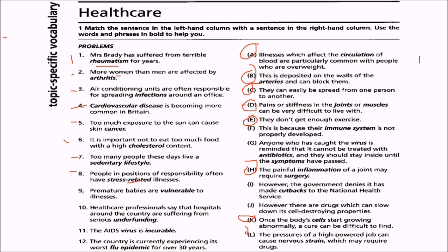Ninth: premature babies are vulnerable to illness. Ninth will match with F — this is because their immune system is not properly developed. We can also say that their bodies lack resistance to illness.